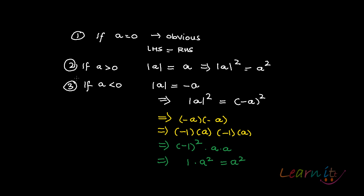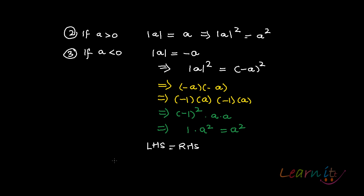So I will get the same result in each. And that's what this property is finally telling us. It is finally telling us that absolute value square is equal to the original square, a square, for all real numbers.